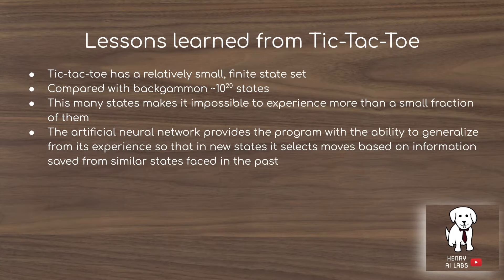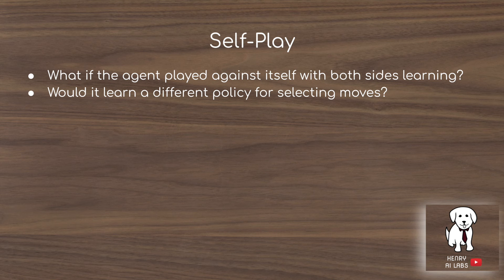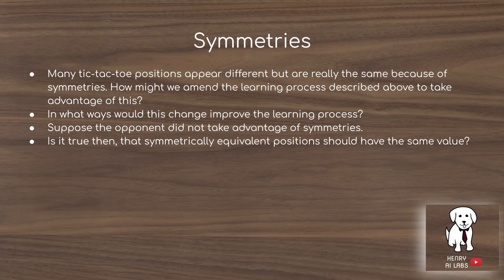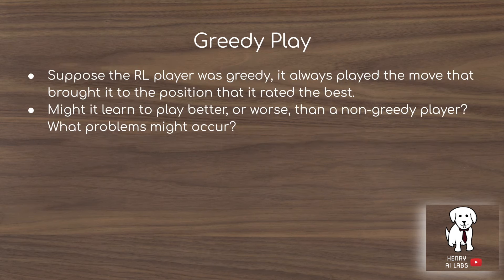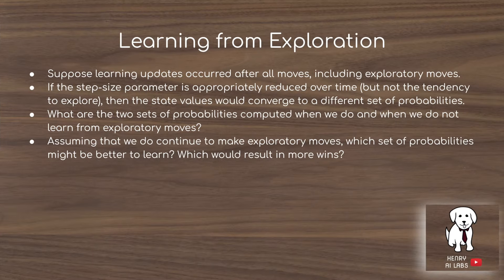The tic-tac-toe game has a relatively small state set compared to games like backgammon that have many many states. This is where the use of neural networks becomes so useful, because it gives you the ability to generalize from experience to new states based on information inferred from similar states in the past. Some interesting questions the book poses include self-play — what if the agent plays tic-tac-toe against itself with both sides learning? Symmetries are also interesting because some tic-tac-toe positions are essentially the same although differently oriented on the board. What if the agent doesn't explore at all and always chooses the policy with the highest value function? And regarding learning from exploration, when the agent acts non-greedily and randomly samples an action, it doesn't apply the temporal difference learning update to that decision, since that was not really its policy but a random choice.